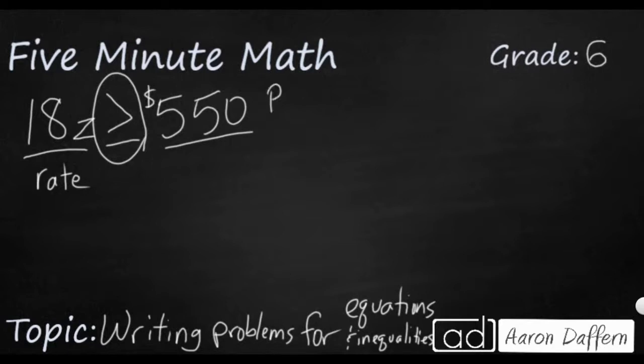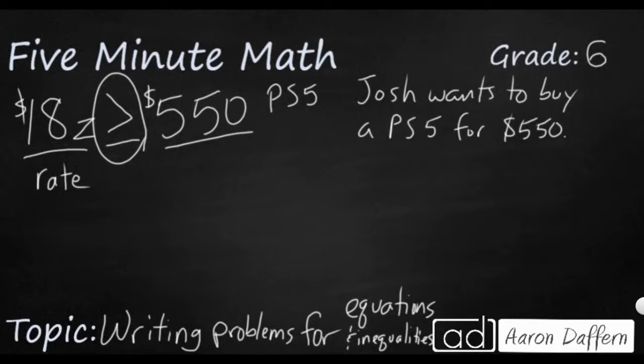And let's say our person is going to be saving up money for a PS5. So let's say Josh wants to buy a brand new PS5, and it's going to cost him, our total is going to be $550. So what he is doing is he's getting chunks of $18. We're going to say that's our rate. So we'll say he mows lawns, that's a good summertime chore, for $18 each.